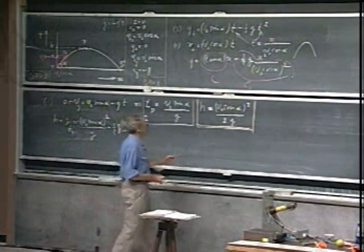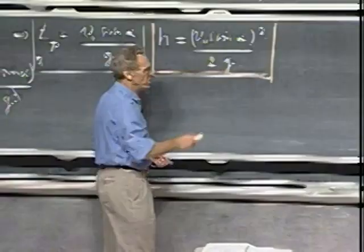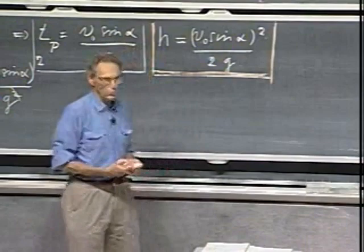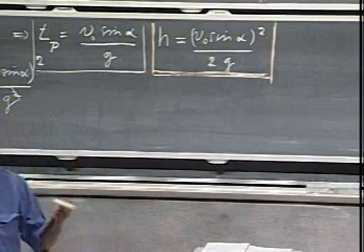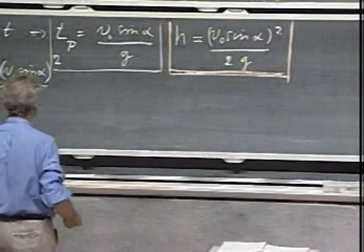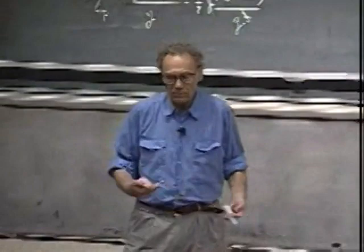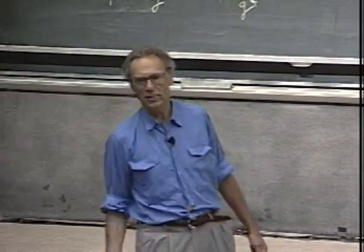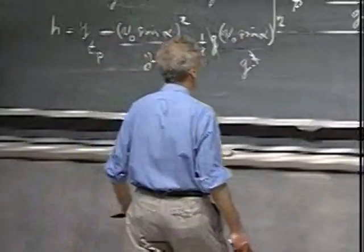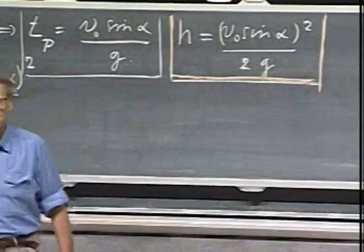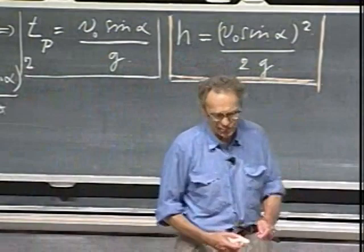Is it reasonable that the highest point gets higher when V0 is higher? Of course — if I shoot it up at a higher speed, it will get higher. If I increase the angle from small to larger and larger, it will also get higher; the maximum is at alpha equals 90 degrees. If you did the experiment on the moon with the same initial speed, it would go much higher, so you're happy to see g is in the denominator. That makes sense.